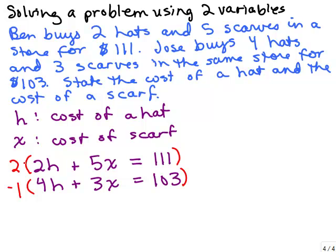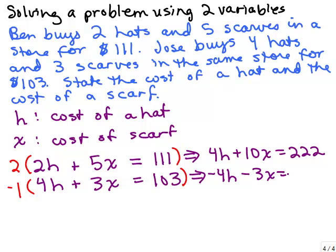In fact, I'm going to multiply the top equation by positive 2 and the bottom equation by negative 1. I'm doing that because I know when I multiply 2 times 111, it'll make it positive and then I'll be subtracting the 103. If you had multiplied it by negative 2, you'd have the negative number on top. Either way, you will end up with the same thing. So I'm going to do 4H plus 10X equals 222 and negative 4H minus 3X equals negative 103.